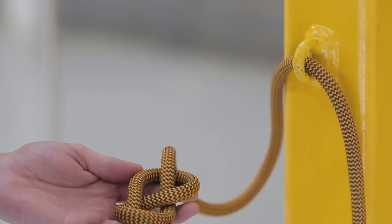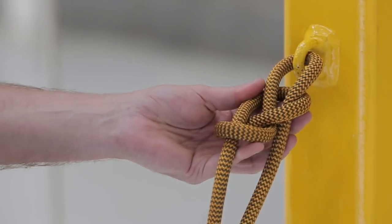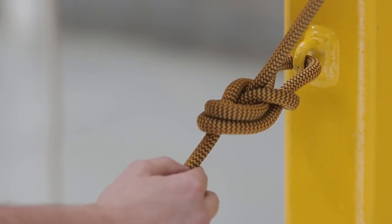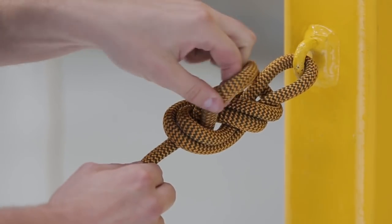Start by tying a loose single figure of eight knot. Pass the remaining tail around the attachment point. Follow the original figure of eight around the entire knot in reverse. Exit beside the standing end to complete.